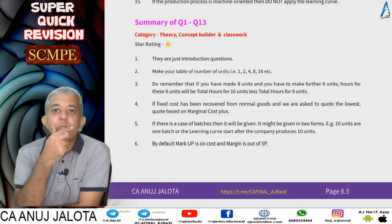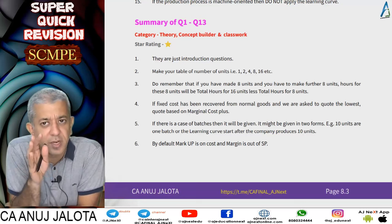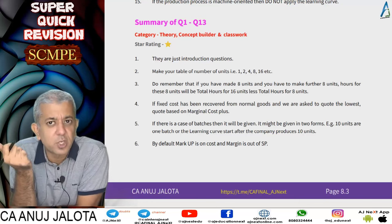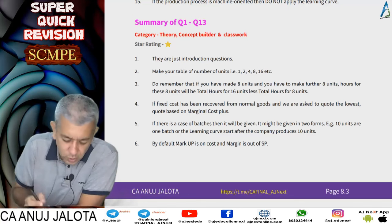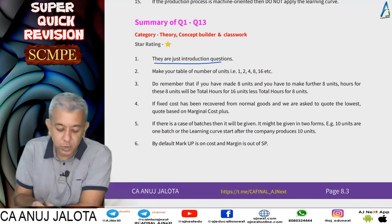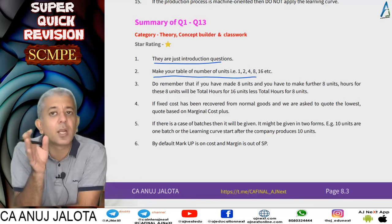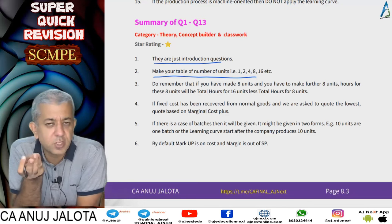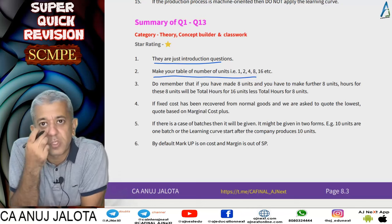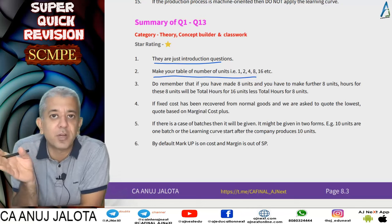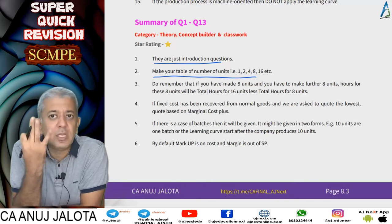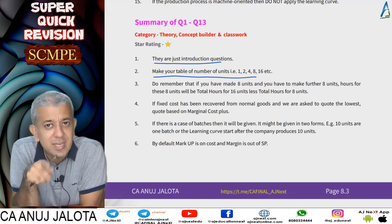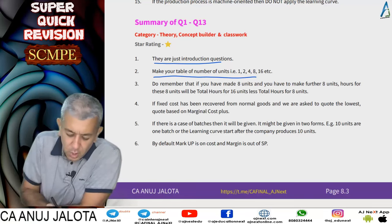This is a summary of question number 1 to 13 — these were all theory questions, concept builder questions, and classwork questions. Many of these were covered in the first lecture. These are just introductory or beginners' questions. Always make your table with columns: number of units, cumulative number of units, average hours per unit, and total hours. If there is a batch concept, add a fourth column for number of batches, average hours per batch, and total hours.